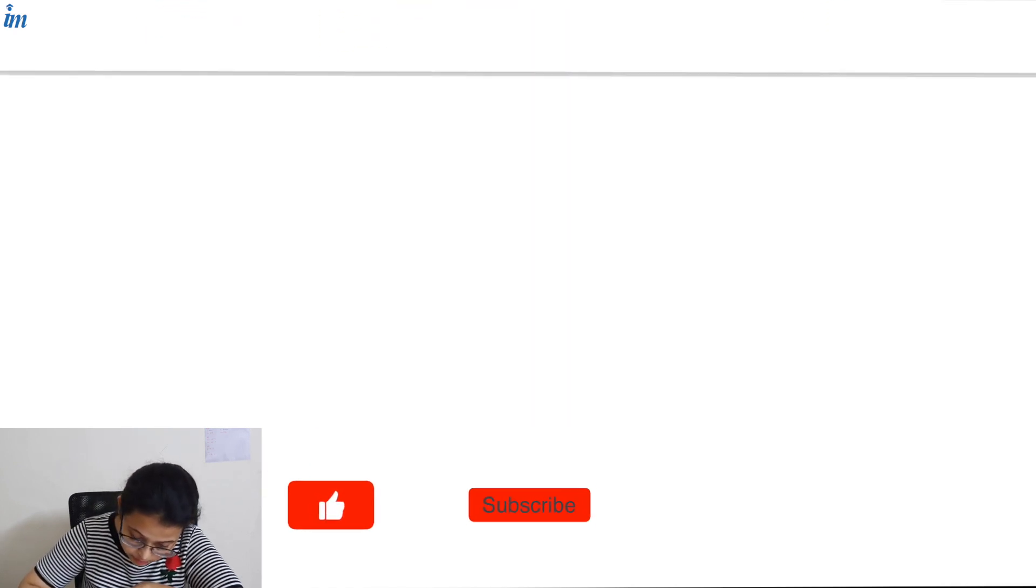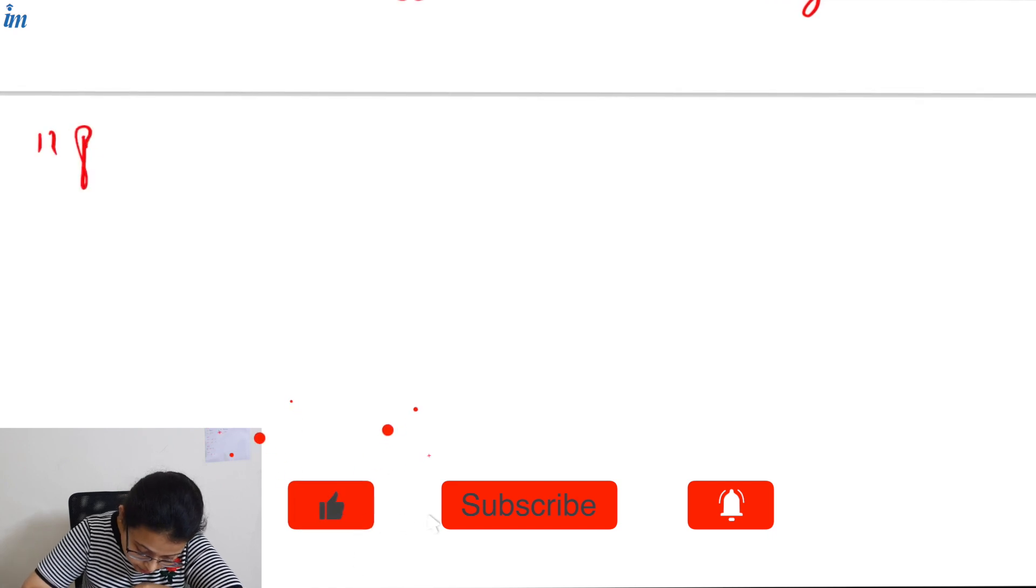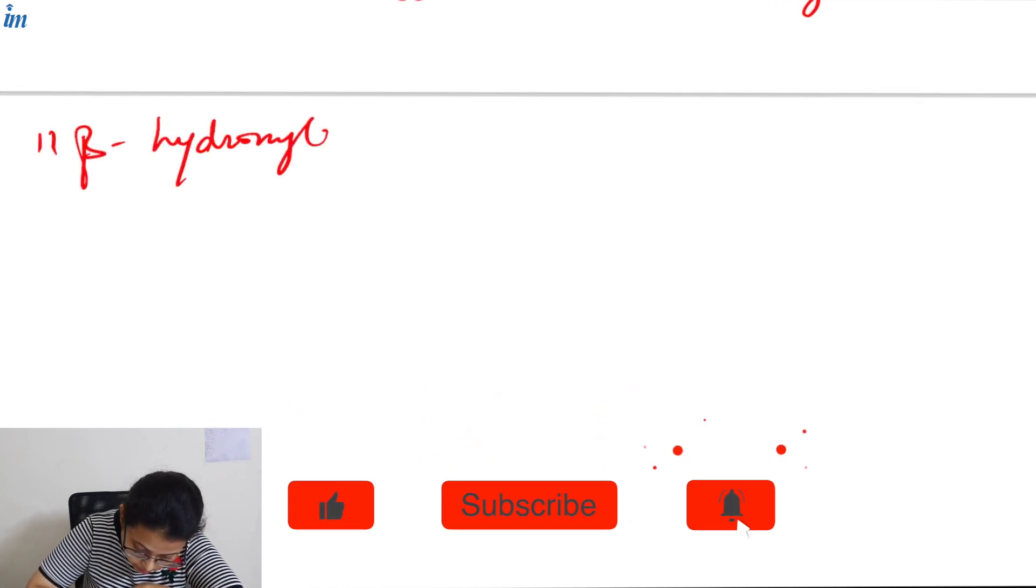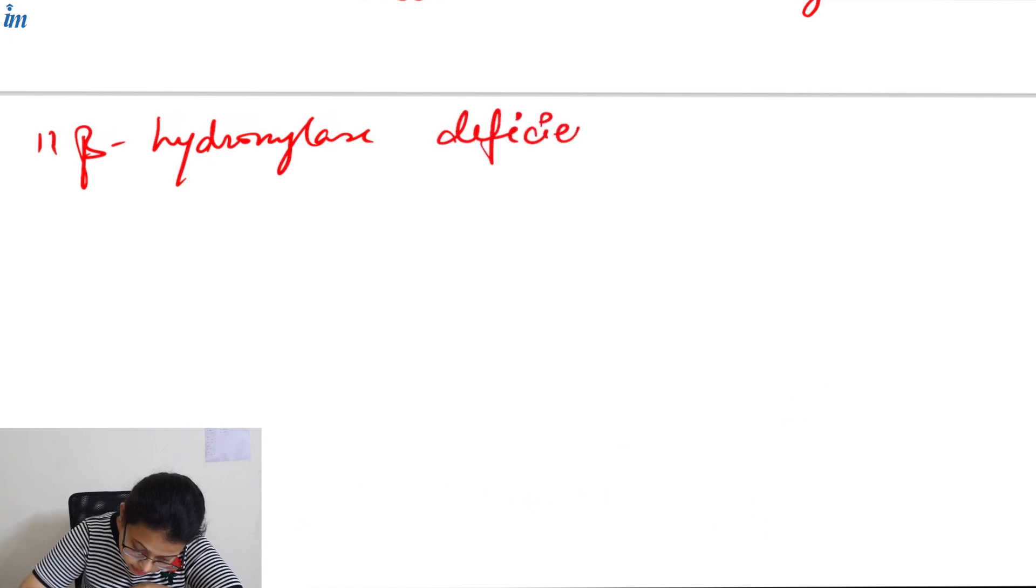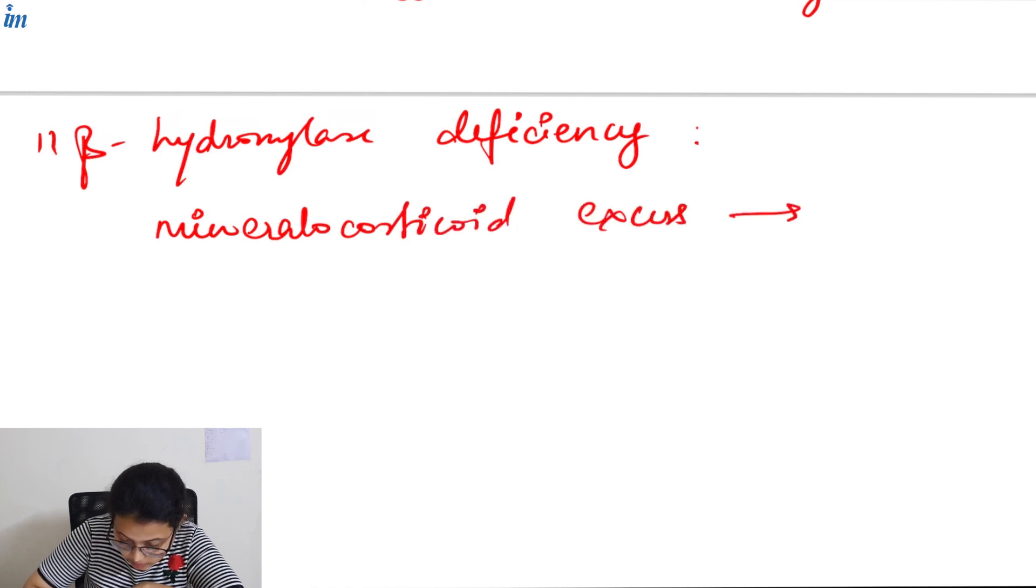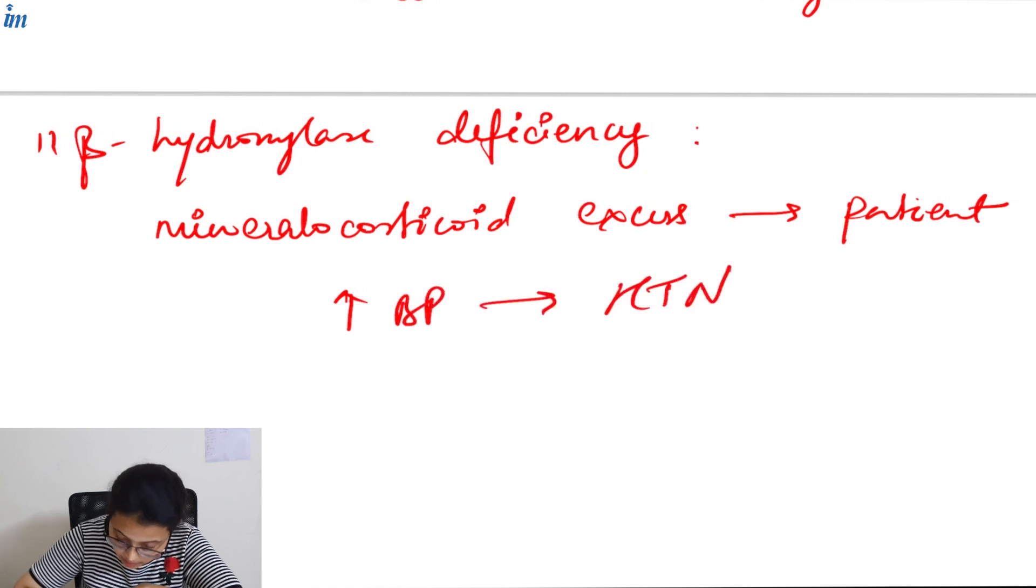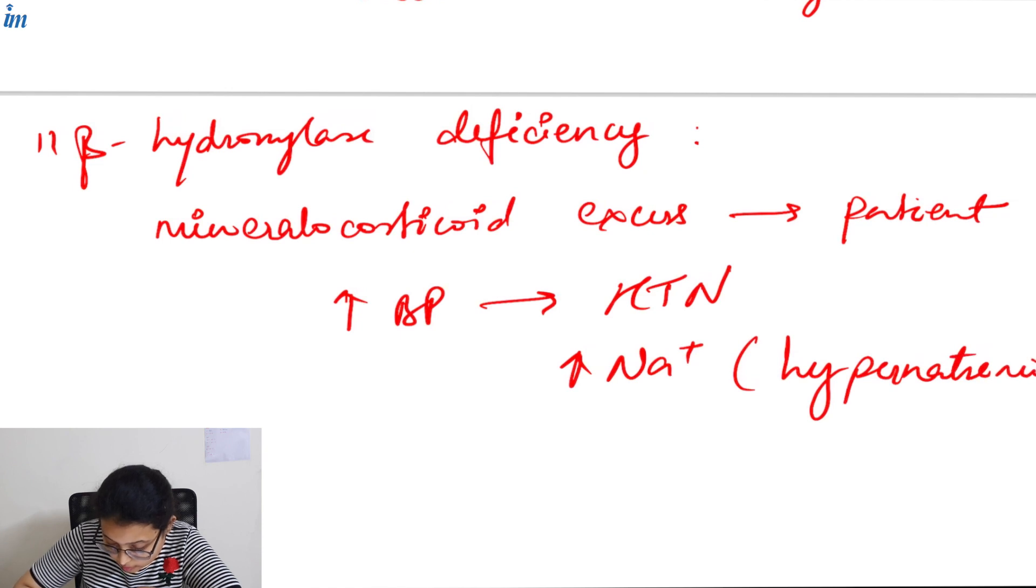As a result, 11-beta-hydroxylase deficiency is clinically manifested as mineralocorticoid excess in the patient. We will see increased blood pressure—hypertension, increased level of sodium ions—hypernatremia, and decreased level of potassium ions—hypokalemia.